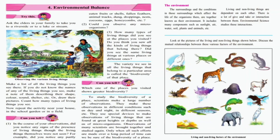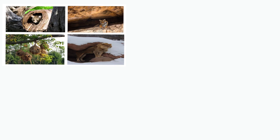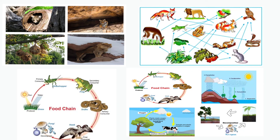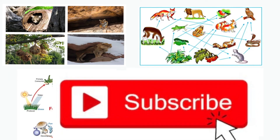So this was our lesson — Environmental Balance. In this lesson we discussed how living things and non-living things are dependent and interlinked with each other. We also discussed the food chain and the food web, the importance of plants in the food chain, and other important environmental cycles. I hope you enjoyed this video. Please do like, comment and share. Do subscribe to my channel to get more videos. Thank you.